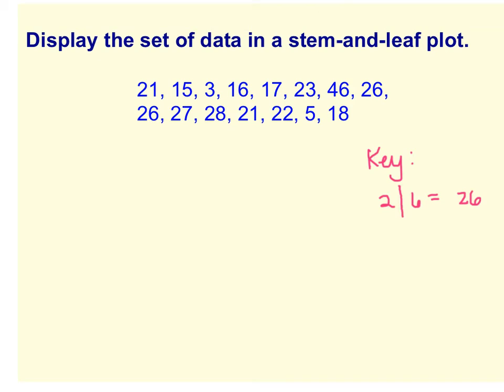Now what we want to do is identify the smallest number and the biggest number of our data set. If you look through this, you can see 3 is the smallest number and it looks like 46 is the biggest number. Keeping in mind that we're representing these as two-digit numbers, 3 is actually a 03 and 46 is just 46.